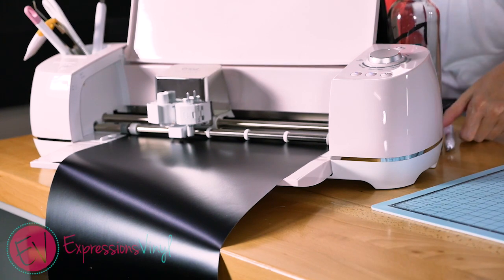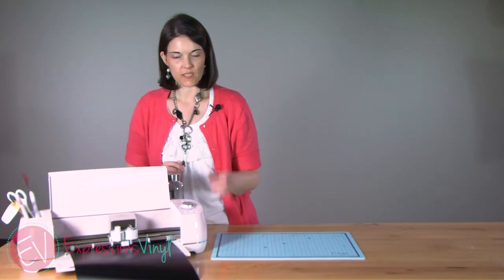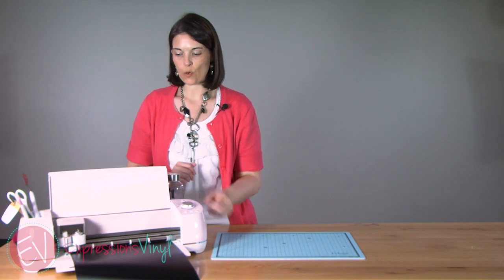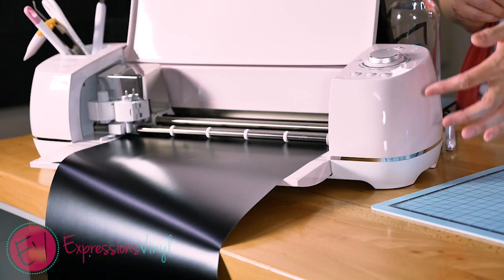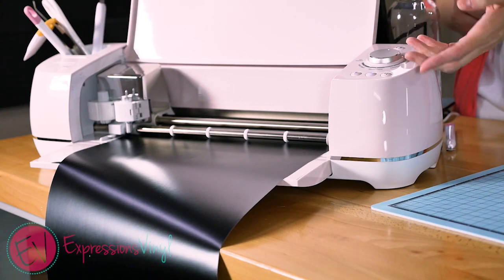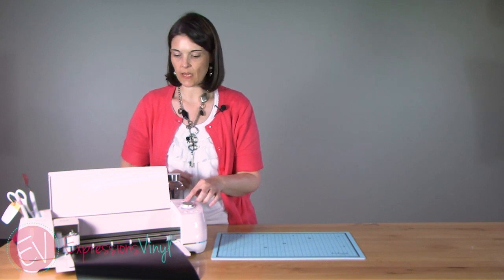Press the go button, and it's just going to cut in the top left-hand corner. Make sure you've got it set to your vinyl setting, depending on what you're cutting.